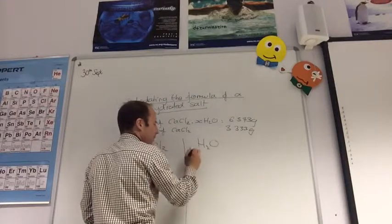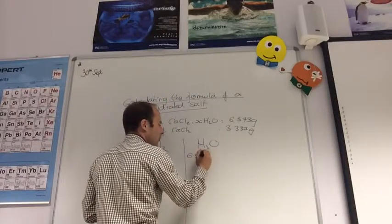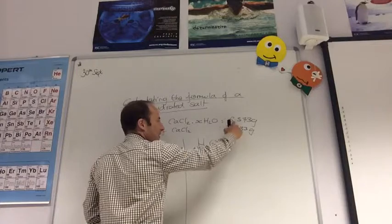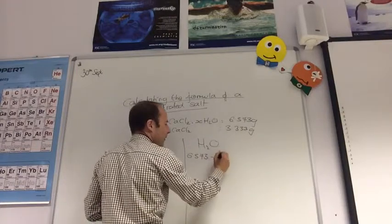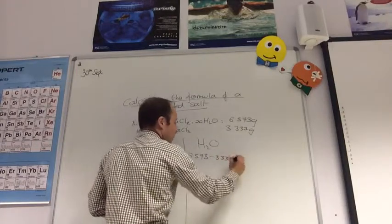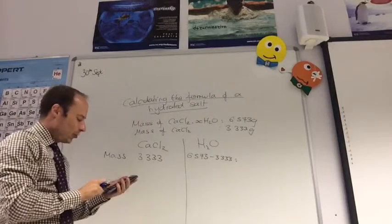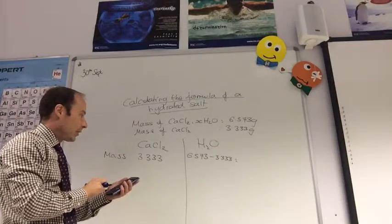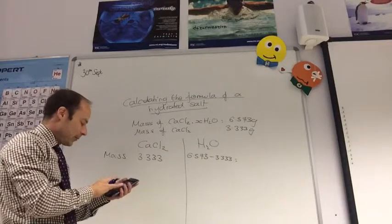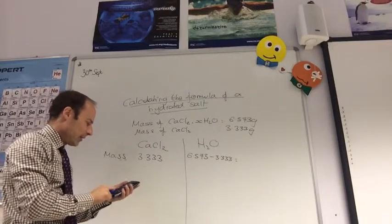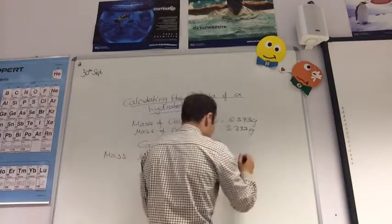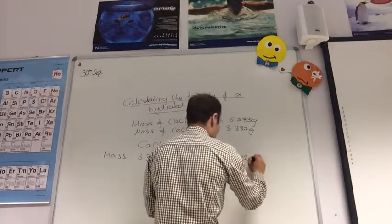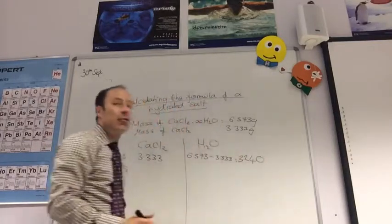How much water have I got? Well, the hydrated salt had a mass of 6.573. The calcium chloride component came to 3.333 grams. So 6.573 minus 3.333. That comes to 3.240 grams.